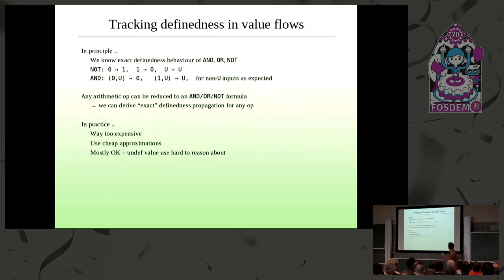So some simple examples. Well, very simple examples. How would we even do this? How would you come up with the analysis which tracks undefined values? So one thing we can say is that for every arithmetic operation, we know that in principle you could implement it using AND, OR, and NOT. It's actually NAND and NOR in real implementations, but it doesn't matter. And we know for all of these three fundamental operations exactly what the definedness propagation is.